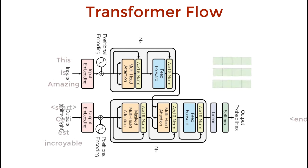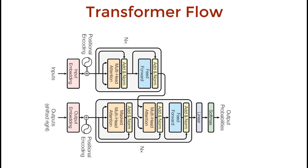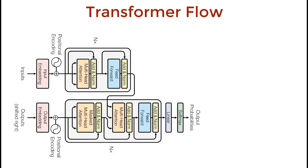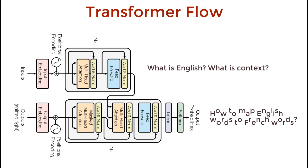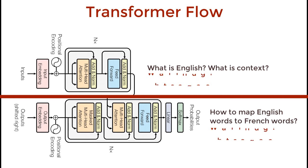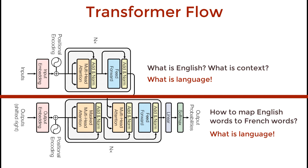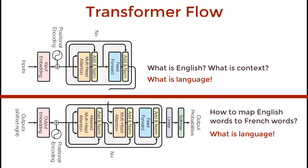What makes this conceptually so much more appealing than an LSTM cell is that we can physically see a separation in tasks. The encoder learns what is English, what is grammar, and more importantly, what is context. The decoder learns how English words relate to French words. Both of these, even separately, have some underlying understanding of language. And it's because of this understanding that we can pick apart this architecture and build systems that understand language.